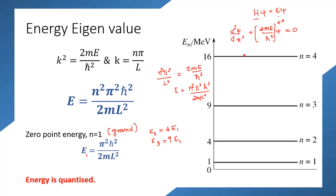The particle can exist only at these specific energy levels and cannot occupy any level in between — those regions are completely forbidden. It cannot take energy values like 8E₁ or 5E₁. The particle can take only quantized energy levels determined by the energy eigenvalues. Therefore, the energy in a square well potential is quantized.